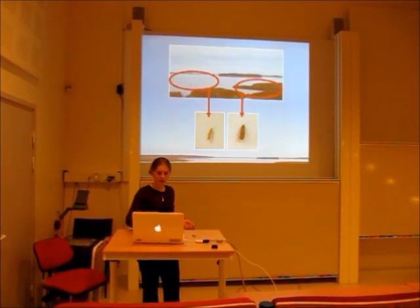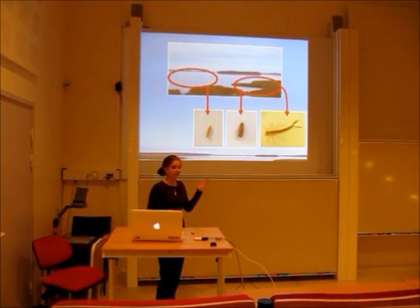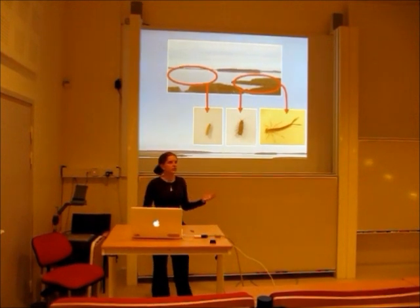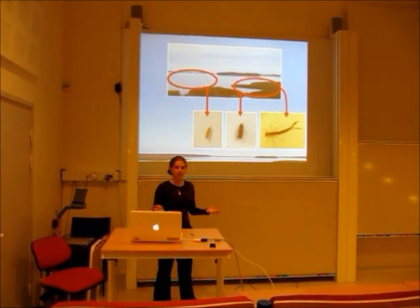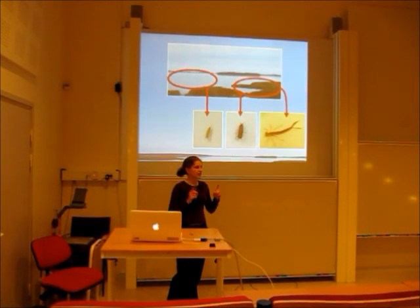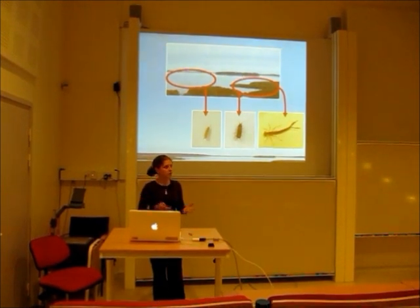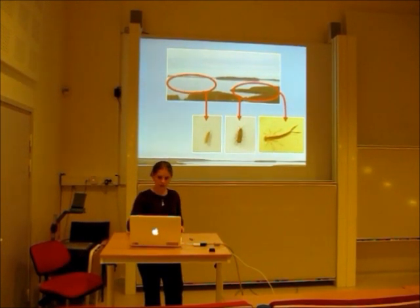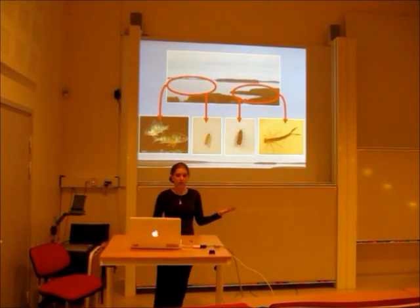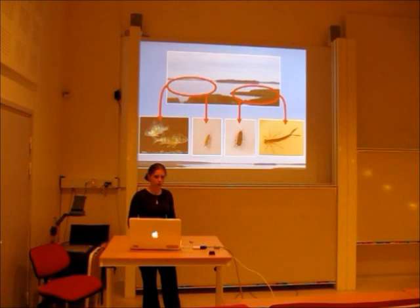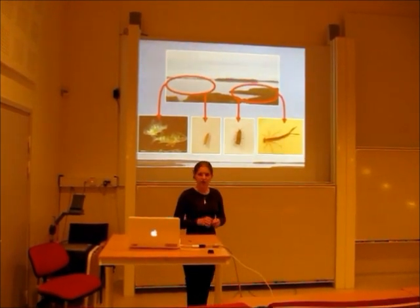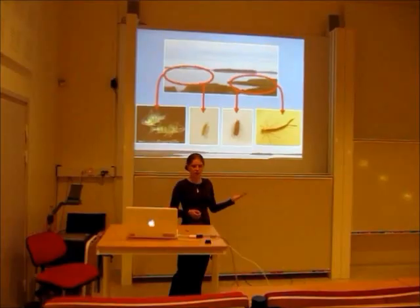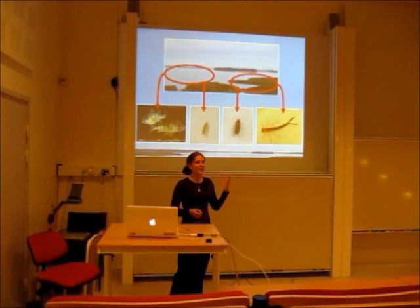In the reed, you have invertebrate predators, here represented by damselfly larvae. These predators sit and wait for their prey, and the size of the prey they are able to eat is decided by the predator's gape size. Thus, a prey can outgrow their predator. In the stonewort stands, the most important predators are fish, here represented by perch. Fish are active hunters — they use their sight to detect their prey, and to avoid predation the best strategy for prey is to be as invisible as possible.